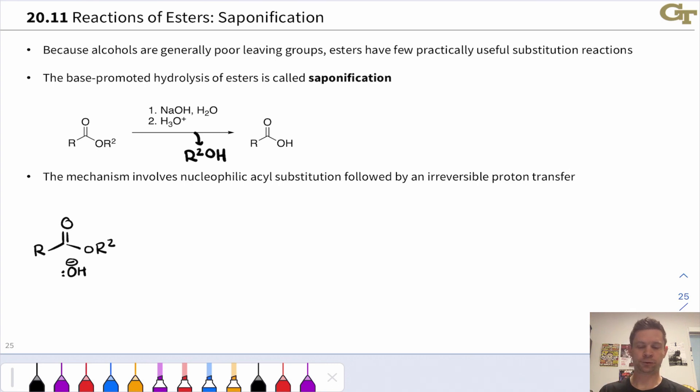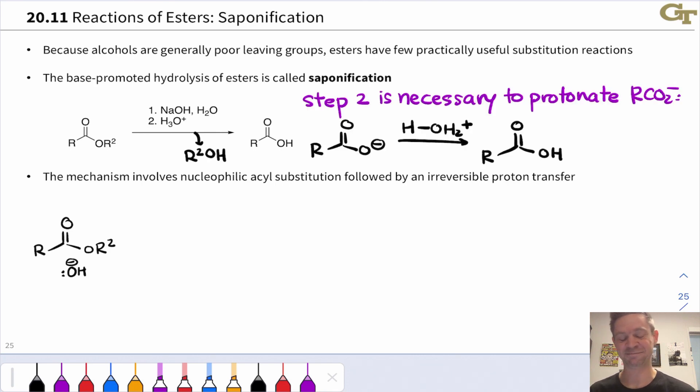The reaction involves treatment with, for example, sodium hydroxide in water. This causes base-catalyzed hydrolysis—actually base-promoted hydrolysis, the reaction is not catalytic, as we'll see. The second step is addition of H3O+, addition of an acid, and this is necessary to protonate the carboxylate if we want the neutral carboxylic acid out of the reaction. Let's talk about the mechanism here.